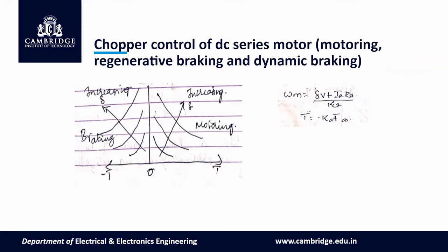For dynamic braking, the chopper circuit used is the same as for the separately excited motor. Since the motor works as a self-excited generator, when changing from motoring to braking, the field should be reversed. Dynamic braking is possible in the case of chopper control of DC series motor, but it is very difficult in the case of DC separately excited motor. This completes the DC motor drives chapter.